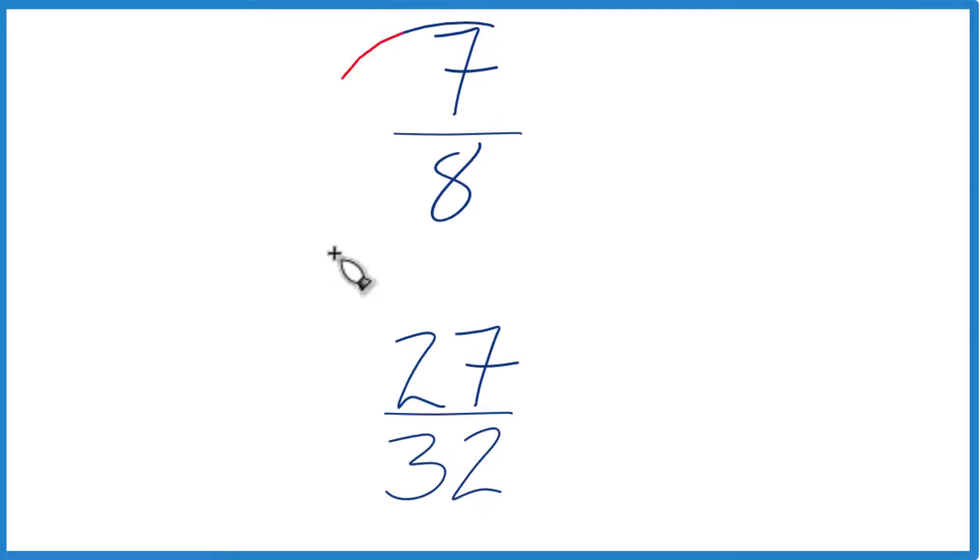All right, so is 7 8ths greater than or less than 27 32nds?